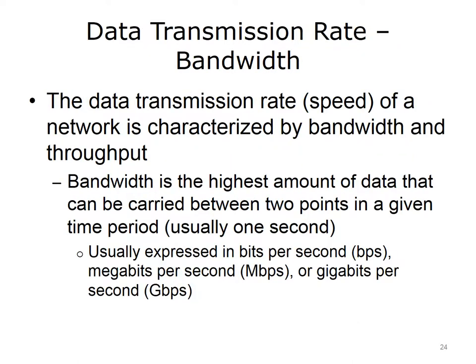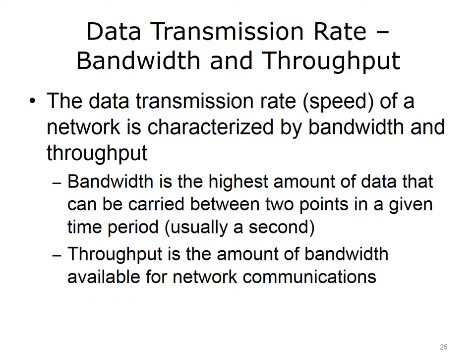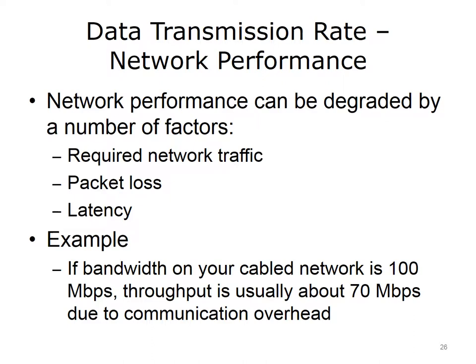One of the most important characteristics of a network's performance is how fast data can be transmitted between its components. The data transmission rate, or the speed of a network, is characterized in terms of bandwidth and throughput. Bandwidth is the highest amount of data that can be carried between two points in a given time period — usually one second. Common bandwidth units are bits per second (BPS), megabits per second (MBPS), or gigabits per second (GBPS). Throughput, on the other hand, is the amount of bandwidth available for actual network communications. Network performance can be degraded by factors such as other required network traffic, packet loss, or latency. For example, the bandwidth of a home network might be 100 megabits per second, but typical throughput is usually only about 70 megabits per second, losing about a third of its bandwidth due to communication overhead.